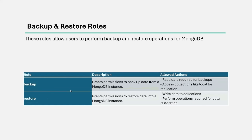Next, we have backup and restore roles. Any user who has the backup role can read data required for backups and access collections like local for replication — essentially granting permission to backup data from a MongoDB instance. Any user who has the restore role is granted permission to restore data into a MongoDB instance, allowing them to write data to collections and perform operations required for data restoration.